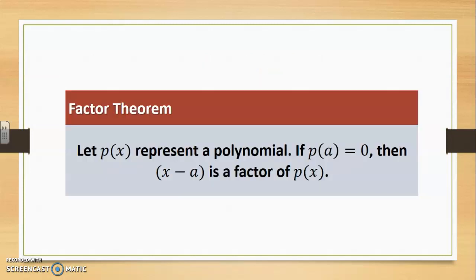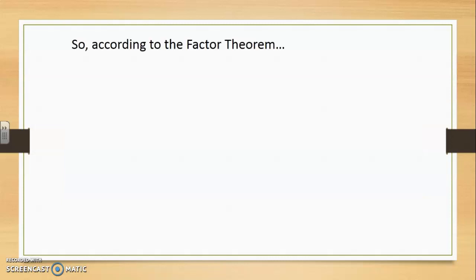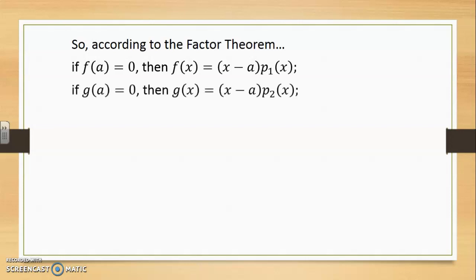The factor theorem said that if a polynomial calculated at a is 0, then x minus a has to be a factor of p(x). So according to the factor theorem, if f at a is 0, then f(x) will be the product of x minus a times p1(x), a polynomial of 1 degree lower. And in the same manner, g(x) can be expressed as x minus a times p2, a polynomial that is 1 degree less than g(x) was originally.